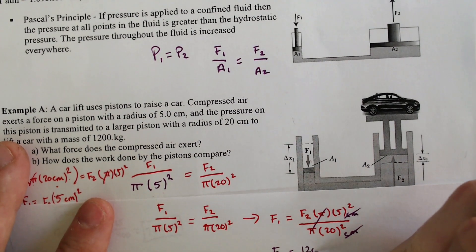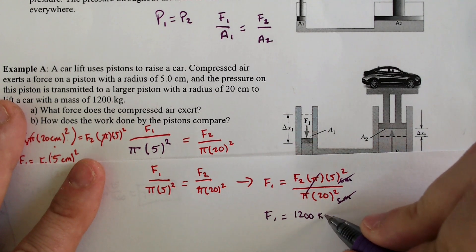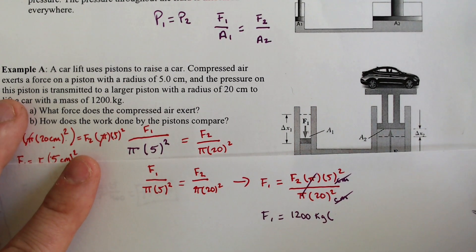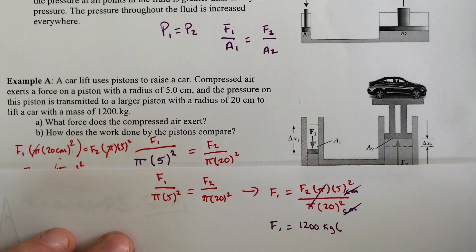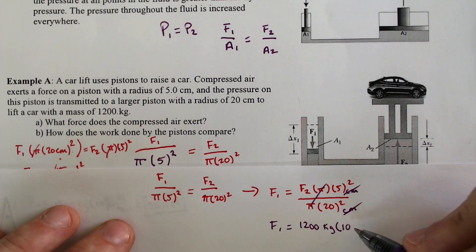Force is equal to mass times acceleration. And the mass of this force 2 is the car. So let's fill that in. 1,200 kilograms times the acceleration.